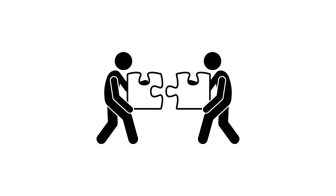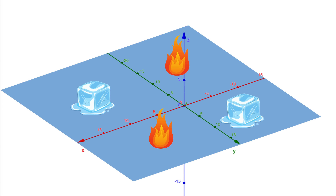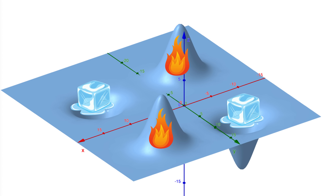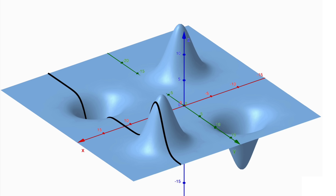Now, let us combine all these ideas to understand partial derivatives and the gradient of a function. Imagine we again have a flat metal plate. On this plate, the temperature is not the same everywhere — some spots are hotter, forming small bumps, and some spots are cooler, forming pits. Together, they make a bumpy surface that goes up and down in different places. Before we think about the full gradient, let's simplify. Suppose we fix x at some value, say x equals 11, and we only move along the y-axis. If we trace a line along this fixed x, we get a curve that shows how z changes as we move along y, while keeping x constant.